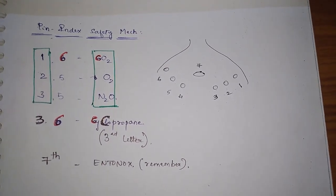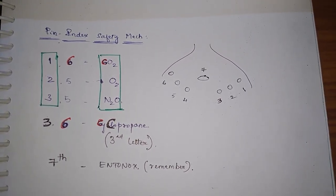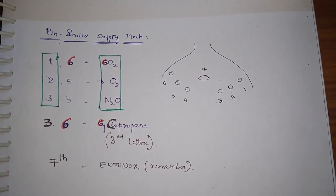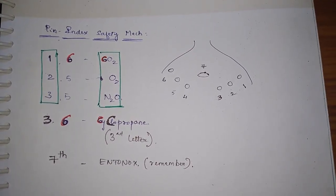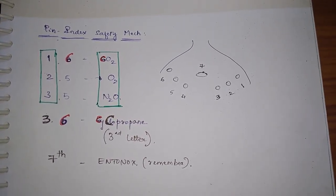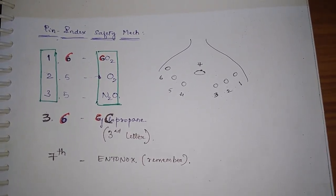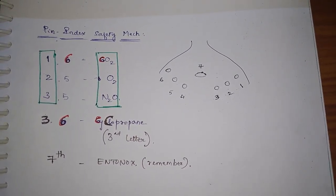We are left with cyclopropane, which we have to put below. And Entonox is the oddest one - it's a mixture of nitrous oxide and oxygen. So the odd one goes with the oddest number in the group, that is seven.